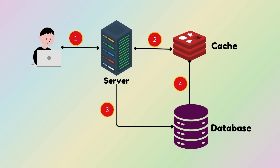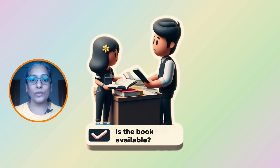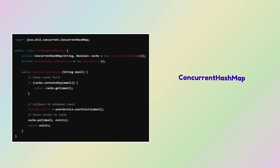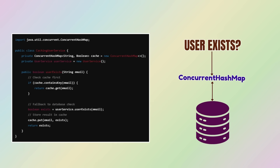Cached data typically has an expiration time to ensure stale information is eventually refreshed. Caching is like keeping a copy of frequently asked questions right on your desk — if someone asks for something you have already looked up, you don't have to go back to the library. Much faster! To implement this caching approach in Java, you could use something like a ConcurrentHashMap to store whether a user's email already exists. If it is in the cache, great. If not, we hit the database, get the answer and cache it for next time.